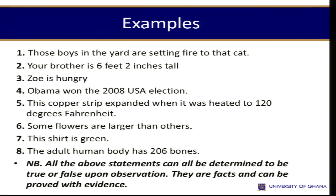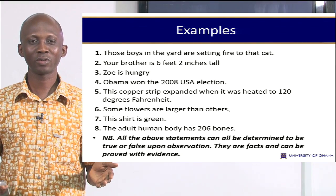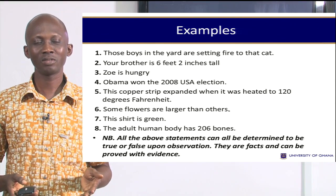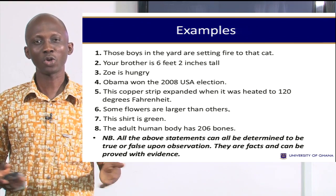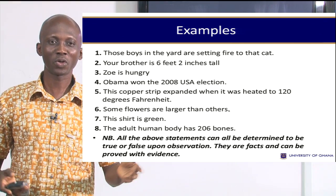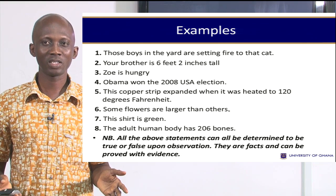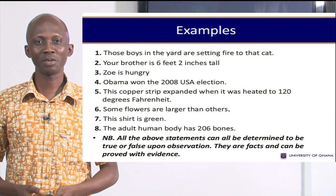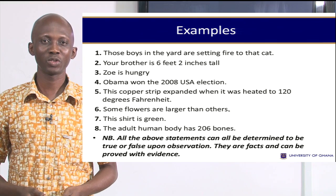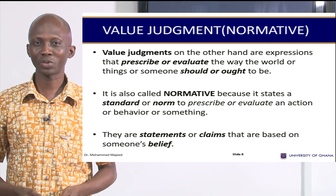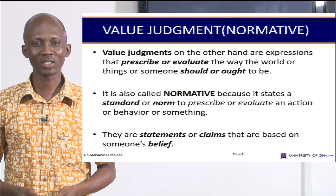We can say something like 'this chair is black in color.' We can also say that there are 10 cars parked in front of this building, or that this boy is taller than that girl. Whatever these things mean, if we want to find out empirically, we should be able to do that. So they are all examples of factual sentences.